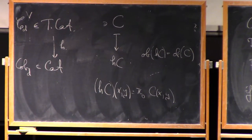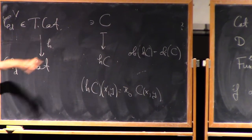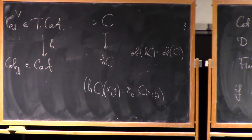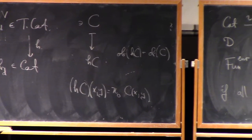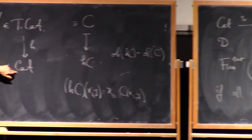So morally, this thing has left adjoint to that functor except it's not actually true. So that's that construction.